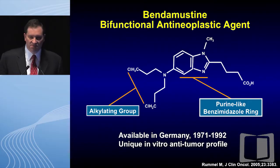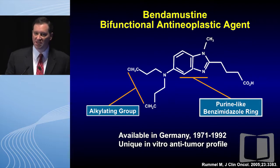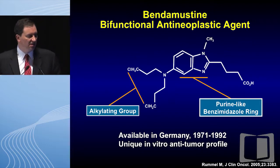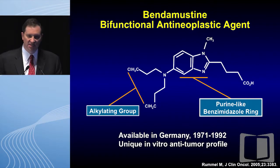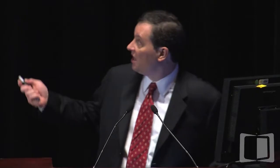I'm going to argue for FCR or FR. Bendamustine is a bifunctional antineoplastic agent that gained tremendous notoriety recently. This agent was developed in 1971 in East Germany and was subsequently used a great deal throughout all of Germany after reunification. It's touted as a bifunctional molecule with an alkylator group and a benzimidazolyl ring. However, what we see clinically is really just alkylator function, and I believe this molecule — instead of being touted as sort of an FCN-1 — is really just an alkylator.